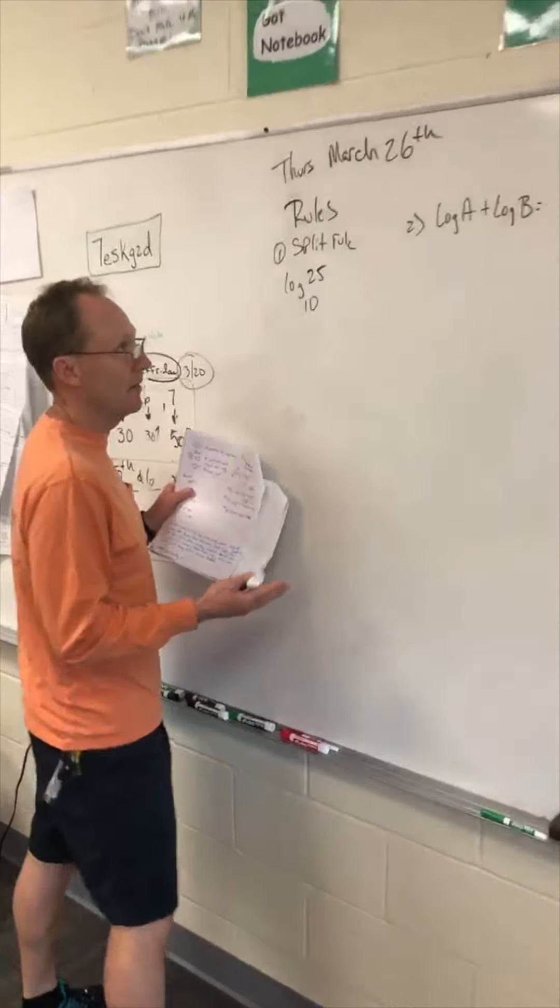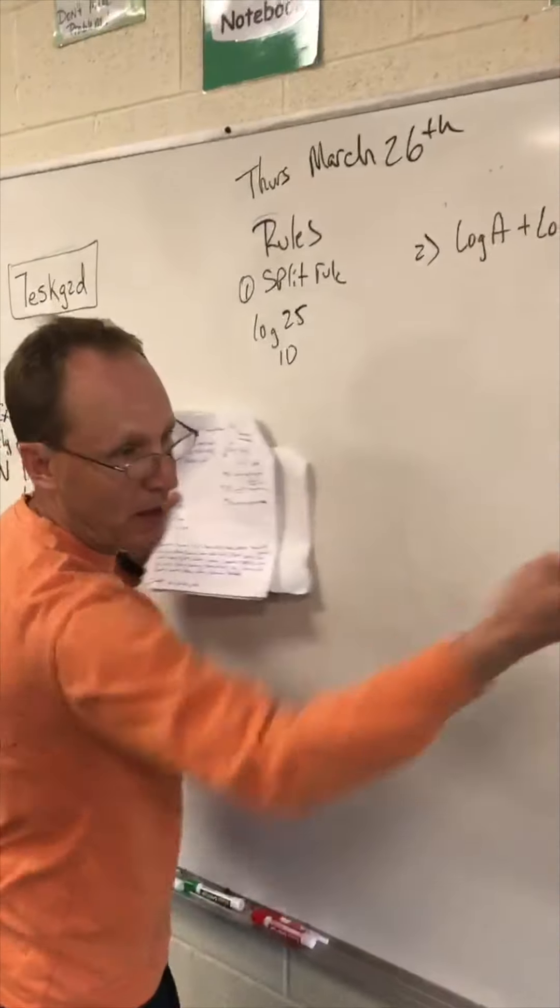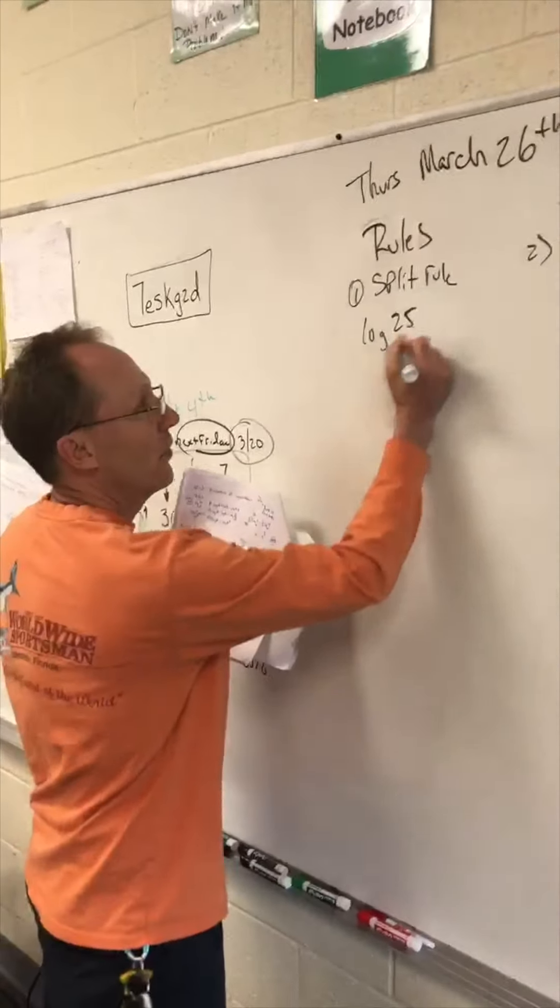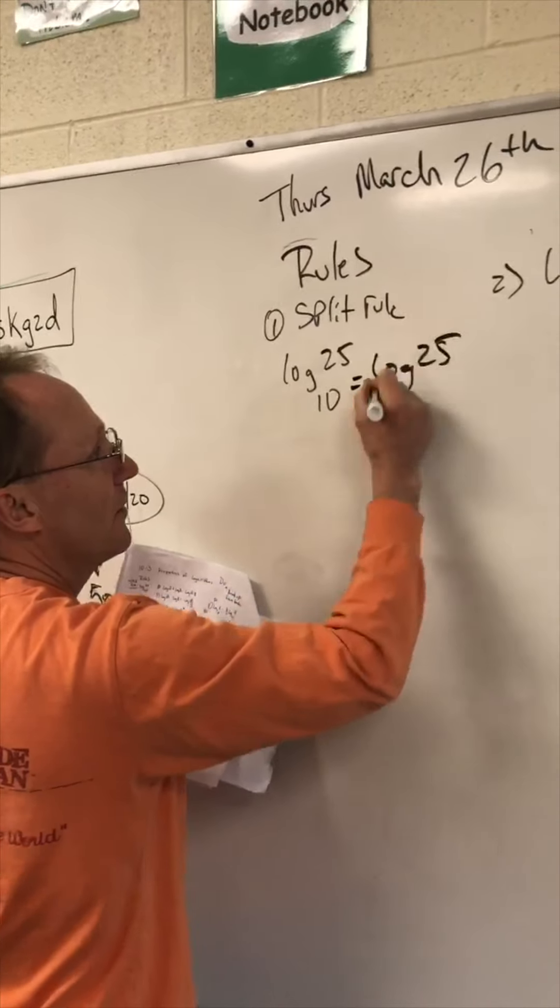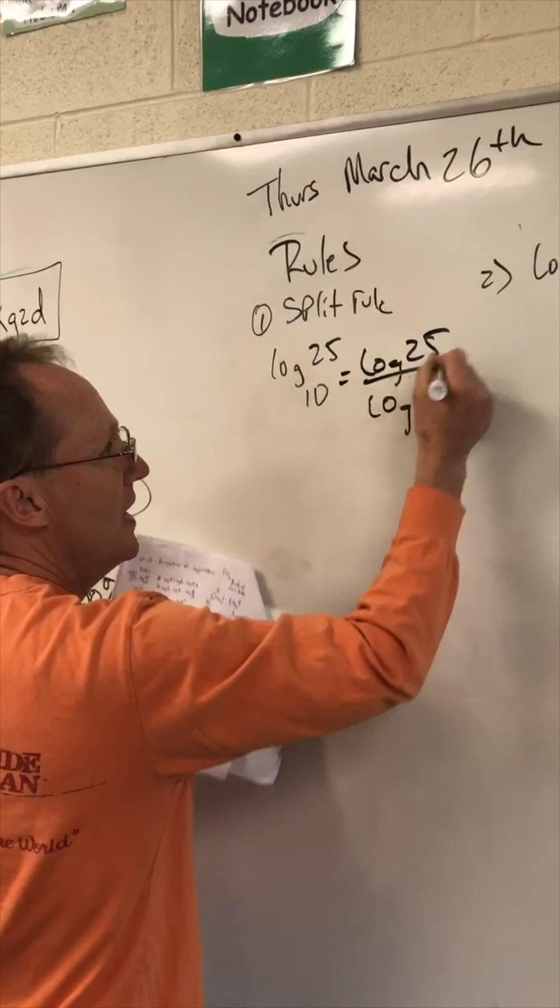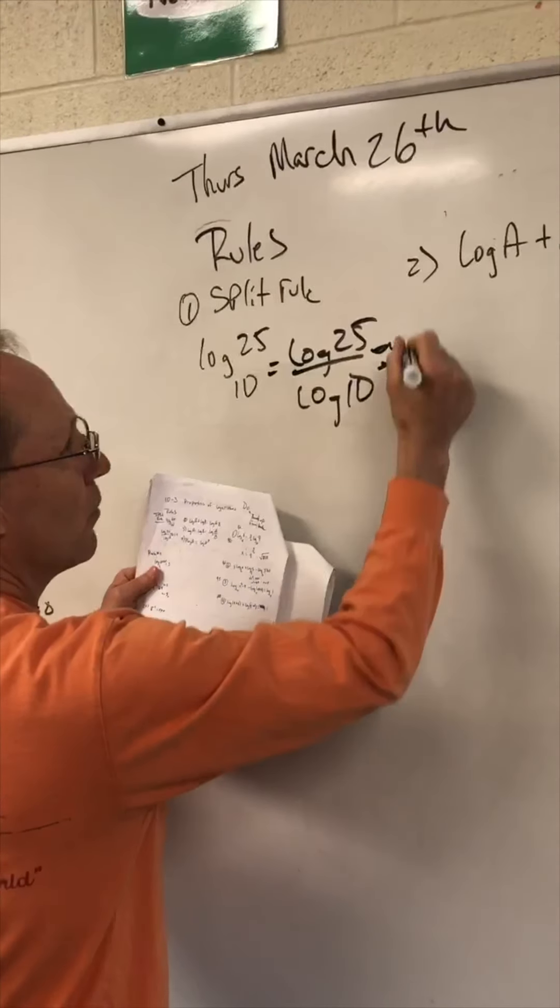All right guys, so now a new lesson here. And what I first want to do is review these rules and then you'll see how the rules apply to today's worksheet. So like this first one here, log 25 base 10. We do a split rule. Log 25 divided by log of 10. And that equals roughly around 1.4.